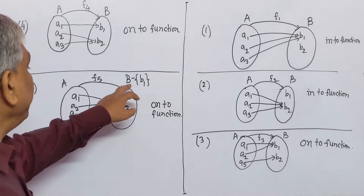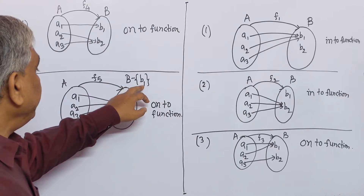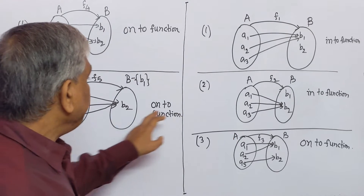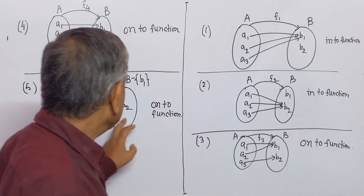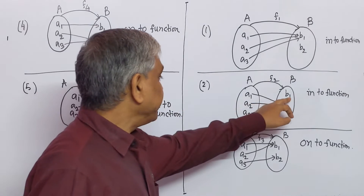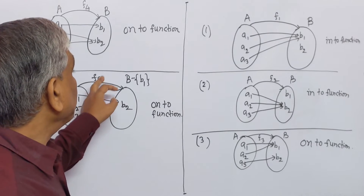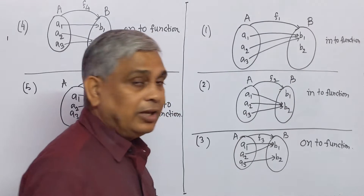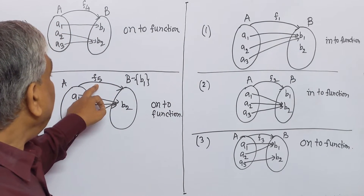Here, the codomain is B minus a set containing element B1. We see that the images of A1, A2, A3 are all B2. But here, B1 has no pre-image. If F5 were a function defined on A into B, then F5 would be an INTO function. This particular function would be a member of the set of all functions defined on A into B.